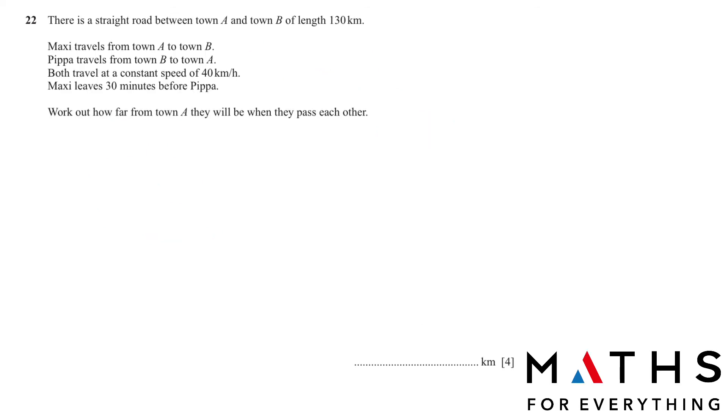Moving on to the next question: There is a straight road between town A and town B of length 130 kilometers. Maxi travels from town A to town B. Pippa travels from town B to town A. Both travel at constant speed of 40 kilometers per hour. Maxi leaves 30 minutes before Pippa. Work out how far from town A they will be when they pass each other. There's a lot of information here, so it's always better to write down things, break it into steps so it becomes easy for you to understand.